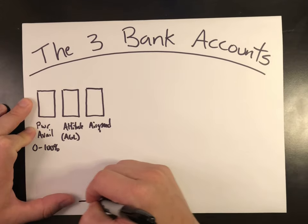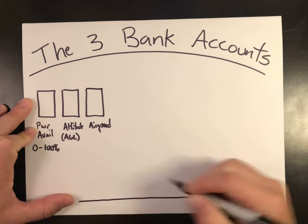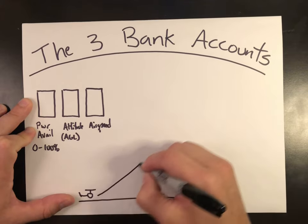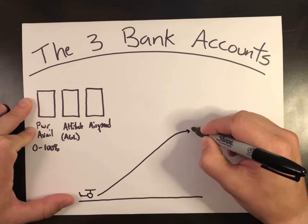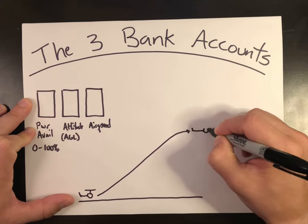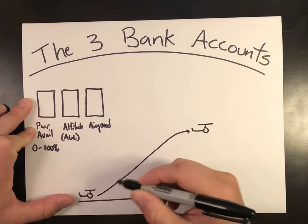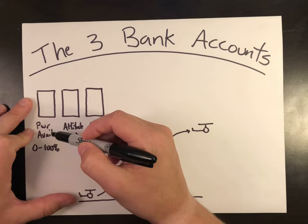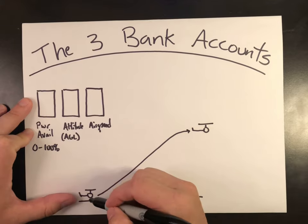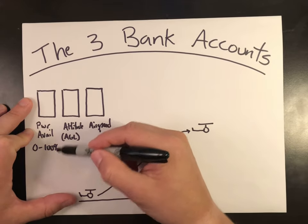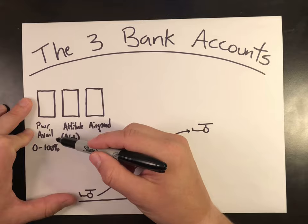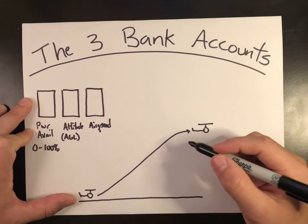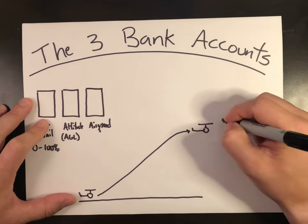Let's say I've got my helicopter on the ground and I want to take off and get established in straight and level flight. As I pull in power, I'm reducing my power available account. If I need 80 percent for the takeoff, that only leaves me 20 percent remaining — but I start building my altitude and airspeed accounts.